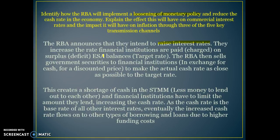They then sell government securities to financial institutions at a discounted price, because they need to incentivise banks to buy them, to make the actual cash rate as close as possible to the target rate. It's really important in your answers that you talk about the actual cash rate and the target rate and compare those two things. They increase the amount banks are charged on their exchange settlement account deficits, then sell government securities to bring the actual rate as close as possible to the target.